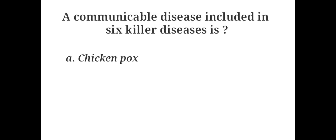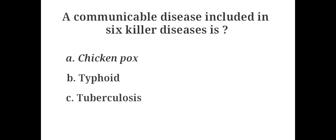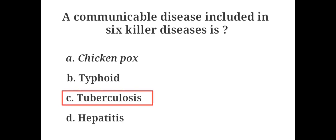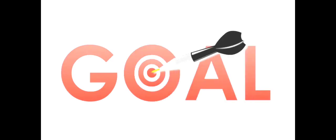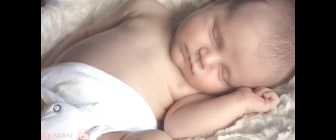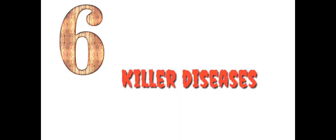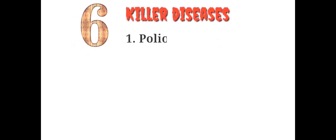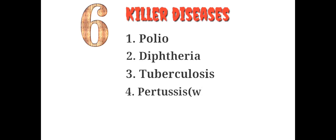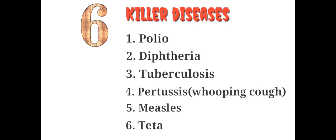A communicable disease included in the 6 killer diseases is: A. Chicken pox, B. Typhoid, C. Tuberculosis, D. Hepatitis. The answer is C. Tuberculosis. The primary objective of preparing this list of 6 killer diseases was to vaccinate all children below the age of 1 year. The list includes Polio, Diphtheria, Tuberculosis, Pertussis, Measles, and Tetanus.